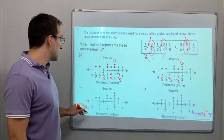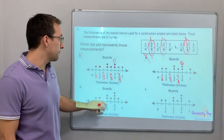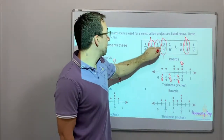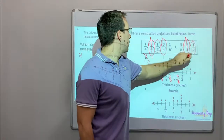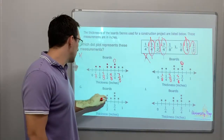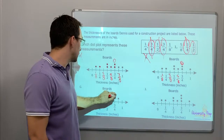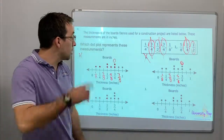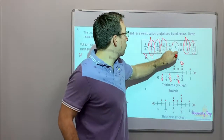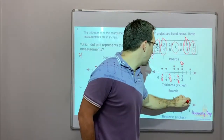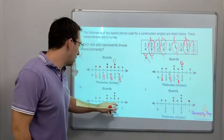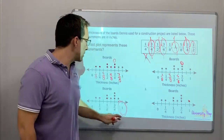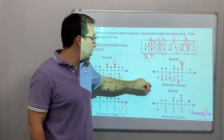Both remaining options have two dots for one-half and three dots for three-quarters — perfect. But one-eighth needs to be in the right place. Looking carefully, the one has to be here — so our answer is J. I'm marking it off, scratching the test, marking it up.